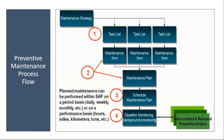In our preventive maintenance flow design, first we created the maintenance strategy, then we created the task list, then the strategy was assigned to the task list - this we already covered. Today we are creating the maintenance plan with multiple cycle. Multiple cycle means nothing but strategy. Yesterday we covered single cycle plan, so today we are covering multiple cycle plan.